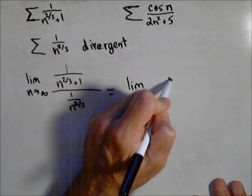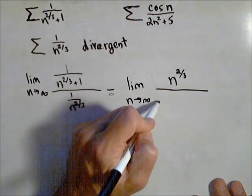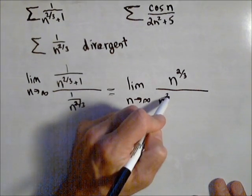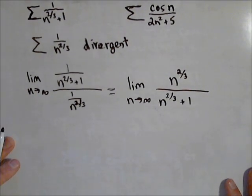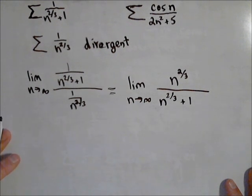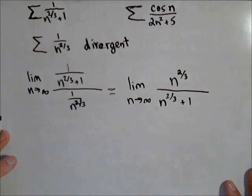So I have n^(2/3)/(n^(2/3) + 1). Now some of you might already recognize what this limit is, because we can kind of treat it like finding a horizontal asymptote of a rational function, even though it's not rational. We can see the similar growth rates.